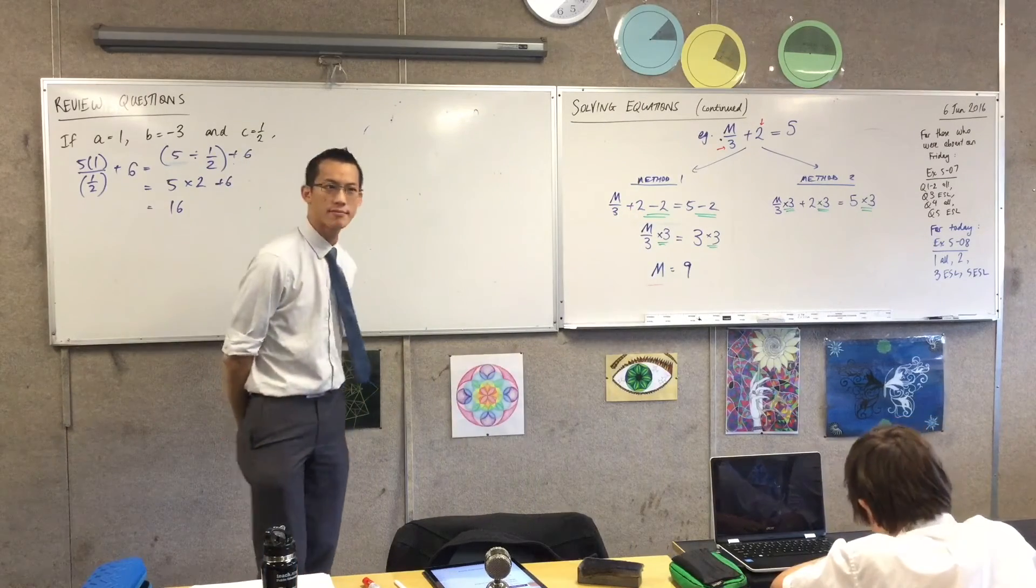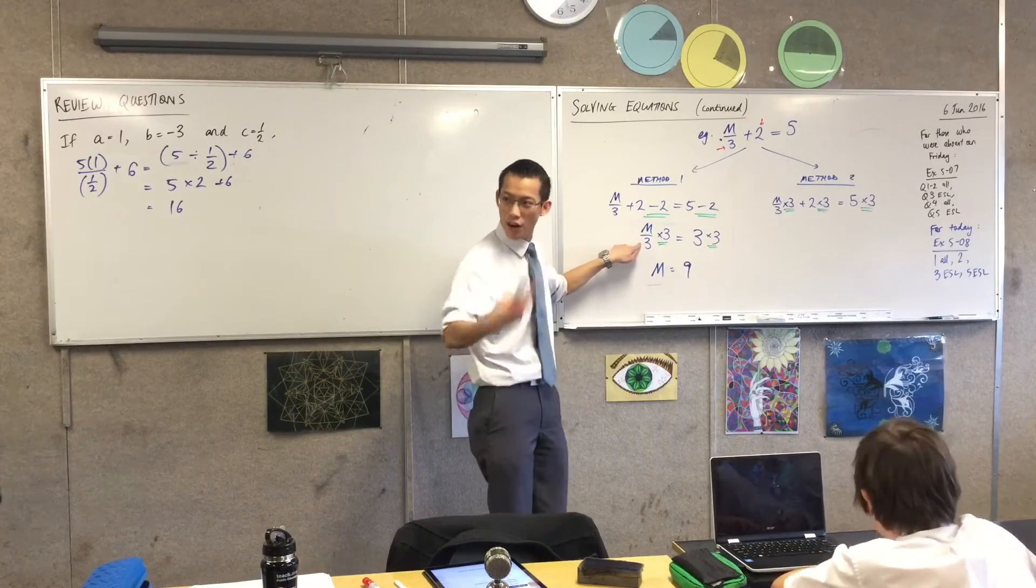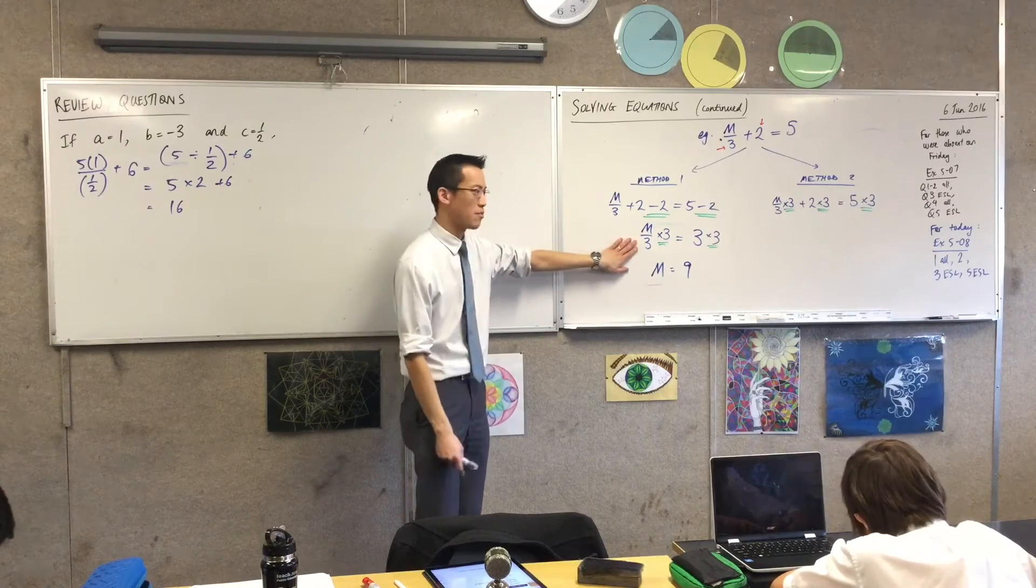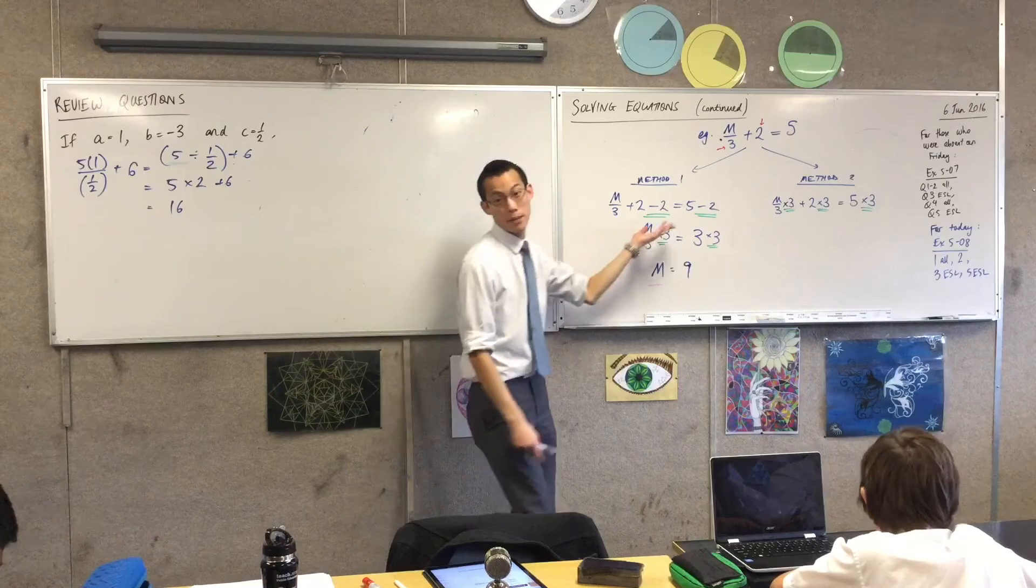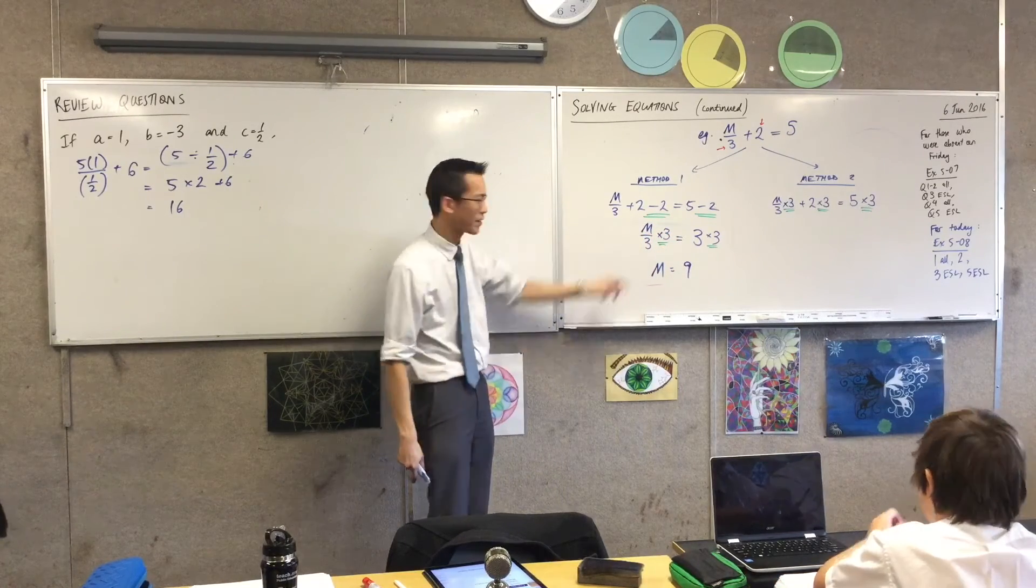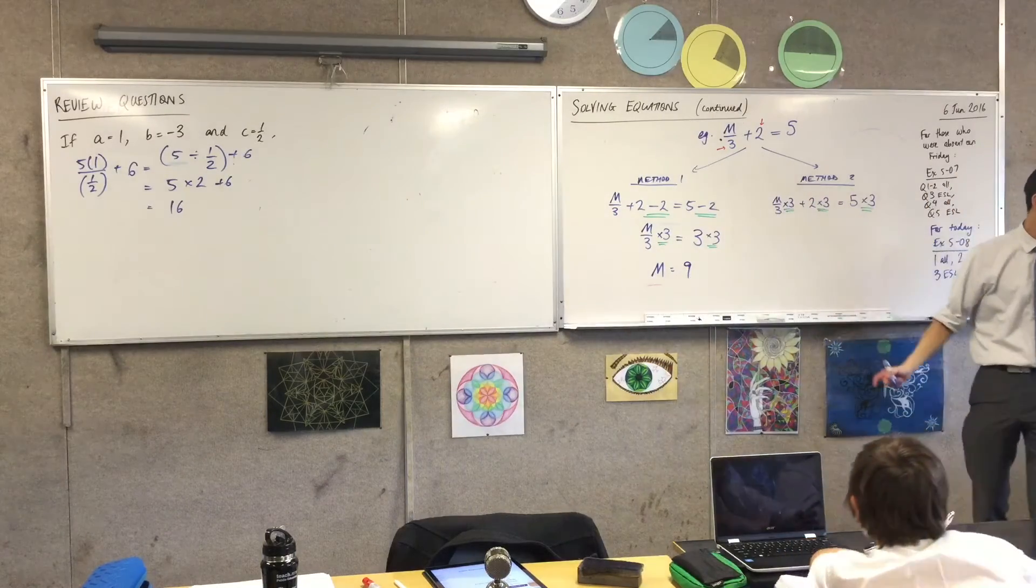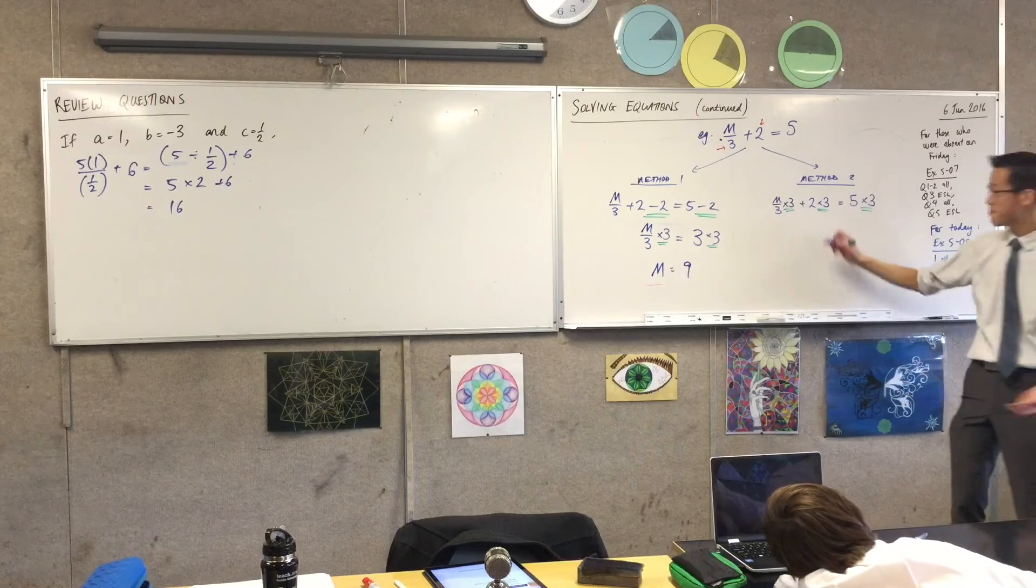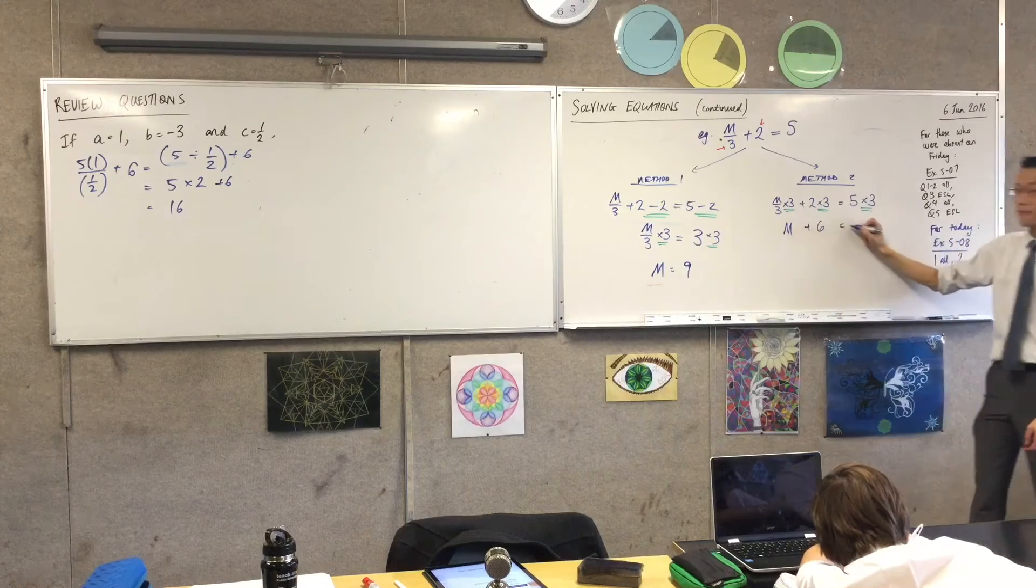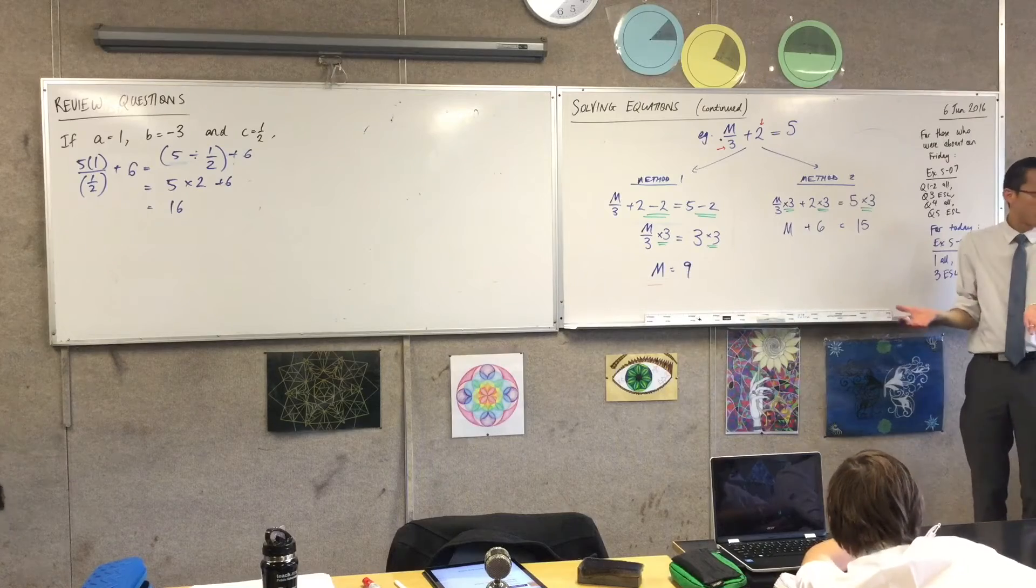Why do you always multiply by three? I multiply by three, it's a great question. Because I'm trying to get rid of division by three. You see that? So if this was division by like 52, I'd multiply by 52. If it was division by half, I'd multiply by half, whatever number happens to be that. Let's have a look at this. M over three times three is going to give me just M. Two times three? Six. And five times three? Fifteen.